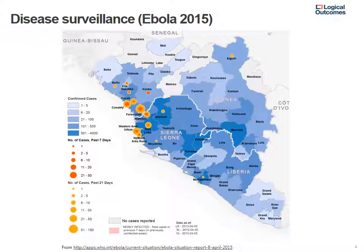Third, we have GIS mapping. Here is an example of a complex GIS map that was used during the Ebola outbreak of 2015. DHIS2 is very capable of tracking information through space.